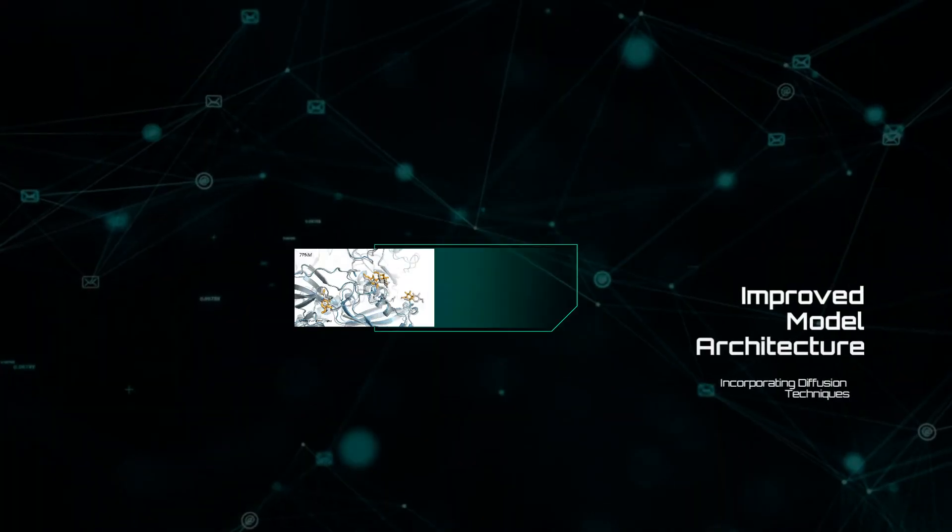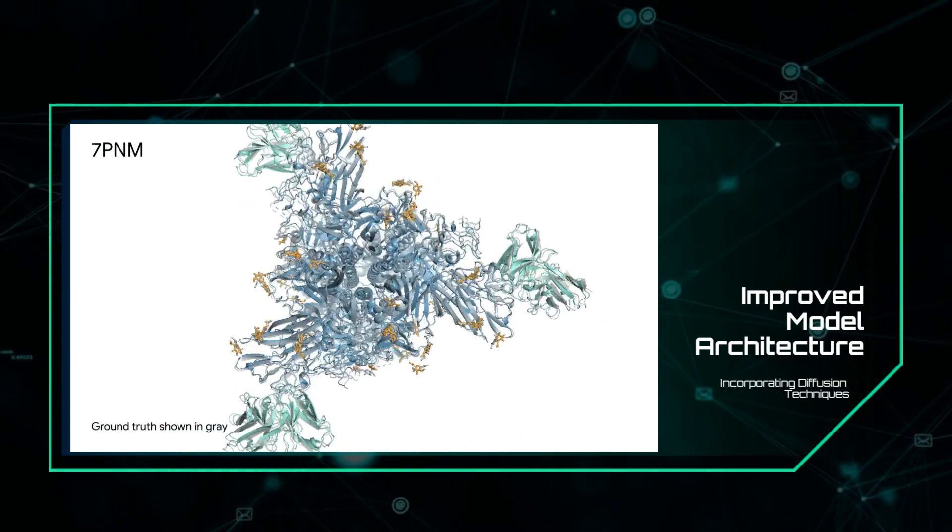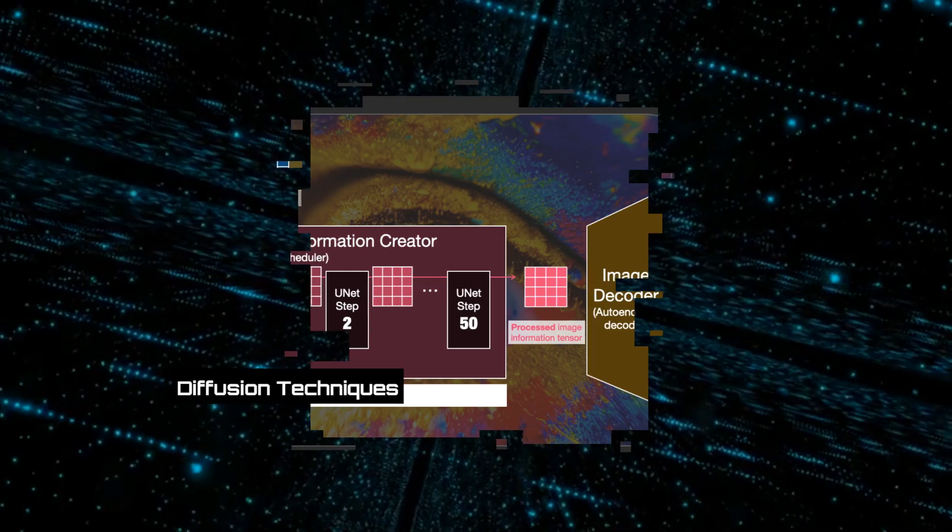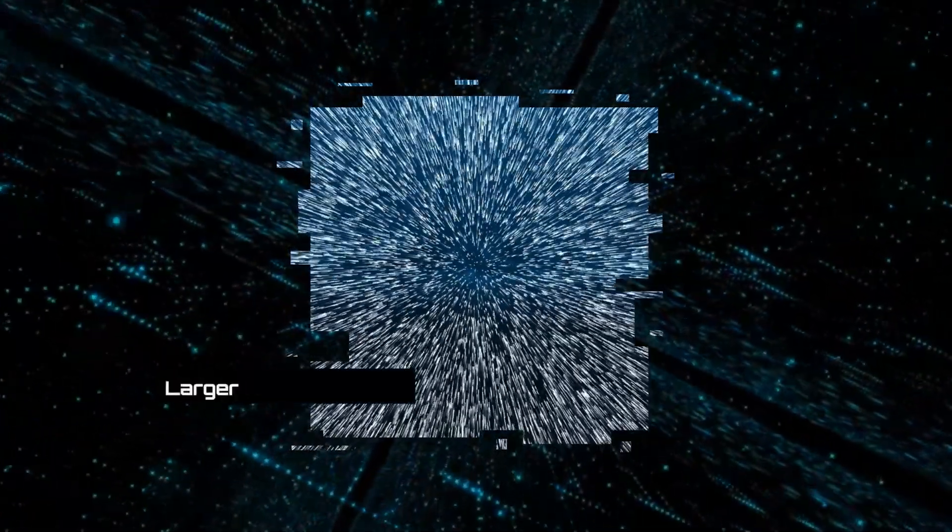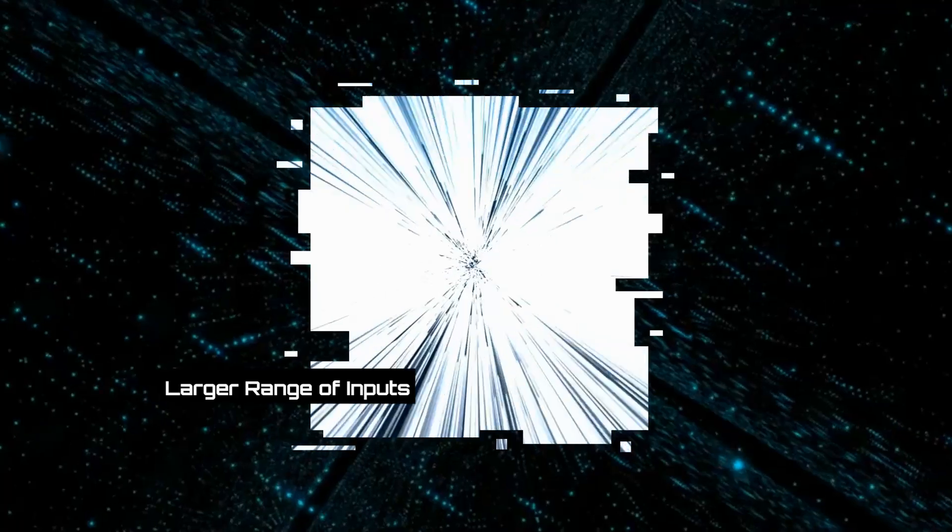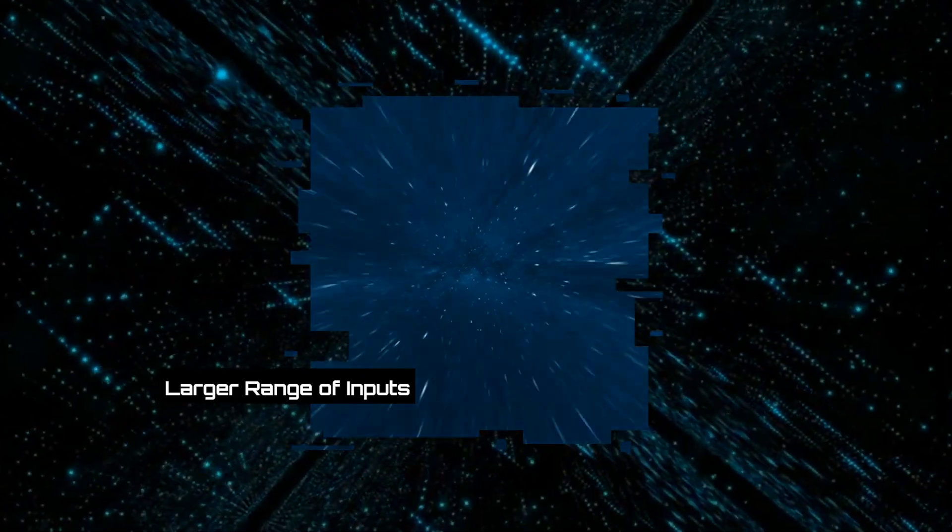AlphaFold3 improved its model architecture by incorporating diffusion techniques, which have been refined in recent years. This approach allows the model to handle a larger range of inputs by gradually reducing noise in a noisy image until an accurate prediction is obtained.